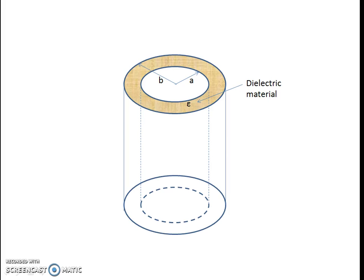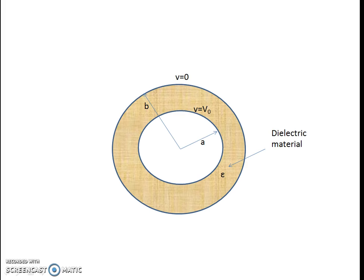Consider a long coaxial cable as shown in the figure. The radius of the inner conductor is a and the radius of the outer conductor is b. Let epsilon be the permittivity of the dielectric medium between the conductors. This figure shows the cross section of the coaxial cable. The potential of the inner conductor is V0 and the potential of the outer conductor is 0.